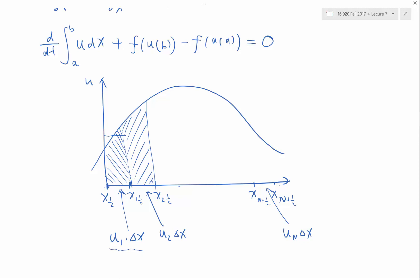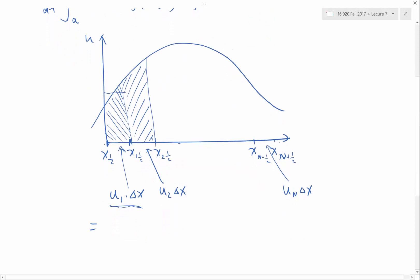These are the values I store on my computer, which is equal to the integral from x half to x1 plus half of u dx. My definition of ui is defined as the integral of xi minus half to xi plus half u dx divided by delta x. In general, in finite volume, there is no difficulty at all to make each volume have a different size.